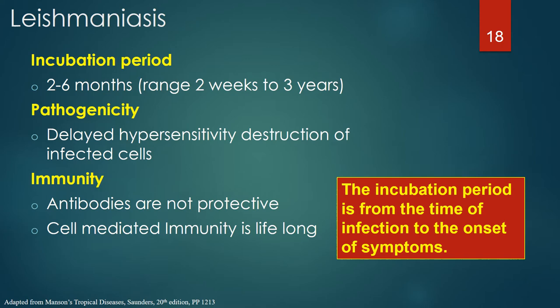The incubation period of leishmaniasis is generally 2–6 months with a range of 2 weeks to 3 years. Pathogenicity is due to a delayed hypersensitivity response of sensitized lymphocytes to granulomas formed by infected macrophages. Antibodies are not protective, yet cell-mediated immunity after infection is lifelong. Infection with Leishmania generates several types of CD4 T cells that mediate resistance to reinfection, including effector T cells, effector memory T cells, central memory T cells, and tissue-resistant memory T cells.